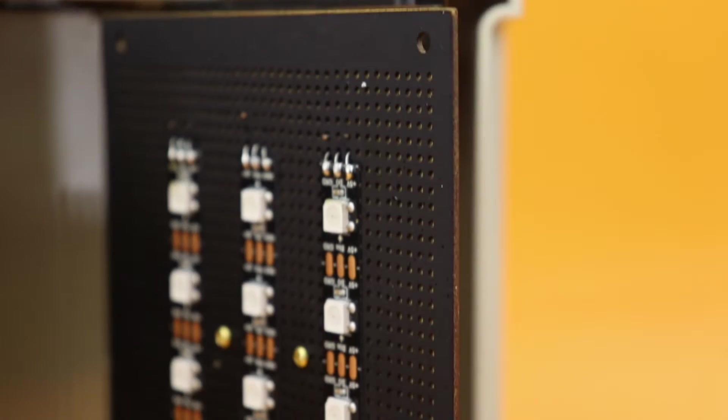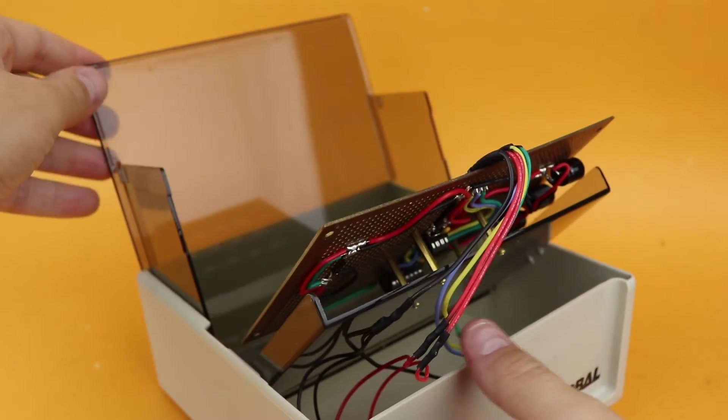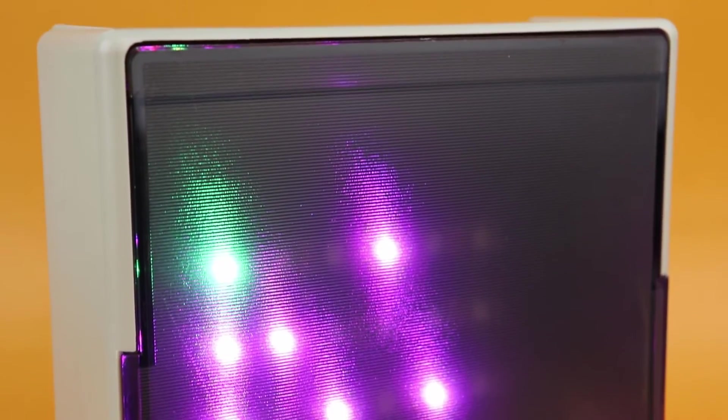And this is how it looks like when we built it not on a breadboard but on a perfboard instead and put it inside a proper housing. This is a vintage floppy disk holder and I think the LEDs look absolutely spectacular behind this dark and ripped acrylic.